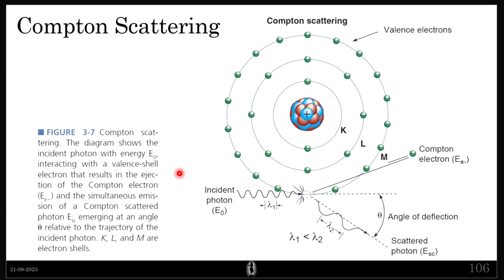The second type of scattering is called Compton scattering. In Compton scattering, the incident photon interacts mostly with the outer electrons or the valence electrons of the atom. Because of this interaction, the electron is ejected. Since this electron is in the valence shell, the binding energy is very small or negligible.